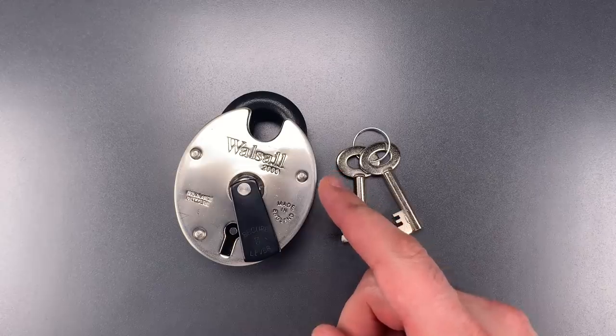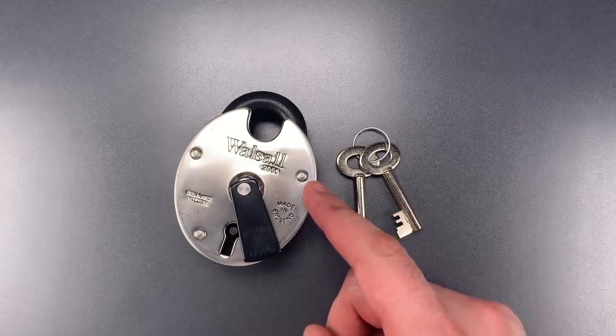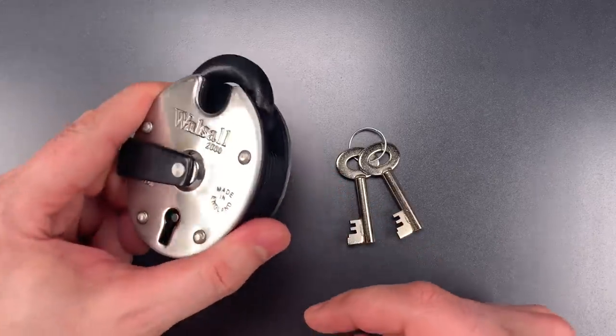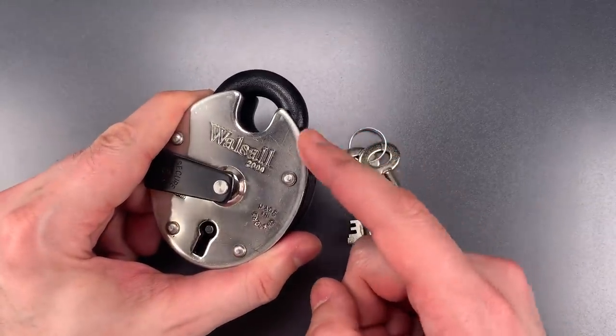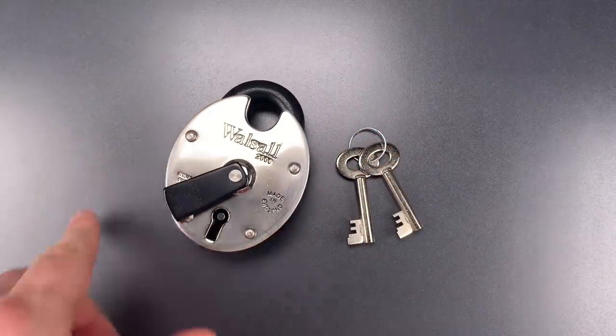This is a Walsall 2000 insurance padlock. It has a heavy steel construction, including a high shackle guard, so it will take a good bit of physical punishment.